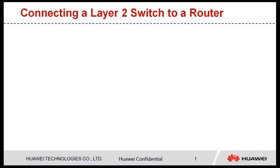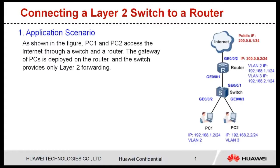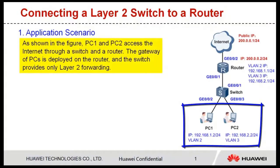Hi everyone. I'd like to show you how to configure a Layer 2 switch and a router when PCs access the internet through the Layer 2 switch and router. As shown in the figure, PC1 and PC2 access the internet through a switch and a router. The gateway of PCs is deployed on the router and the switch provides only Layer 2 forwarding.